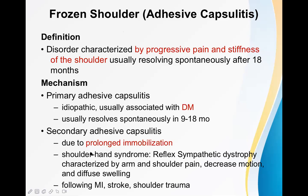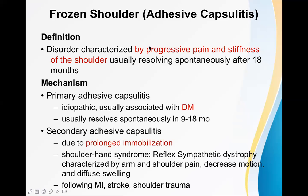The second variety is secondary adhesive capsulitis, which is mainly due to prolonged immobilization. Any joint in the body, if not moved for a long time, may freeze — frozen shoulder is one example. Shoulder-hand syndrome, also known as reflex sympathetic dystrophy, may be a complication of fractures or injury of the limbs. If it occurs around the arm and shoulder area, it may also lead to adhesive capsulitis or frozen shoulder.